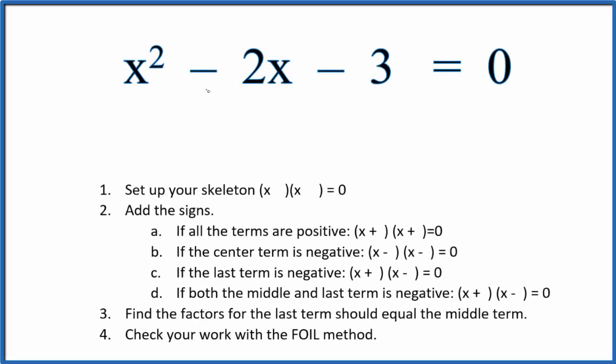In this video we'll factor the equation x squared minus 2x minus 3 equals 0. These guidelines right here will help us do that. First we want to set up our skeleton equation. This is our skeleton equation.